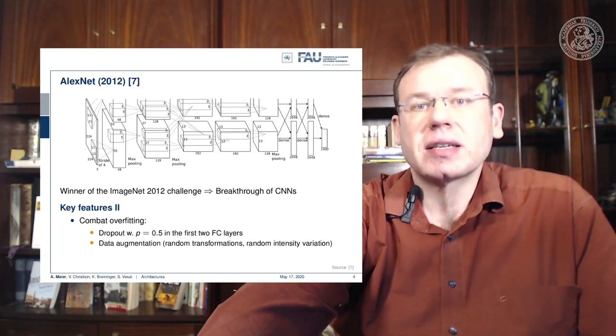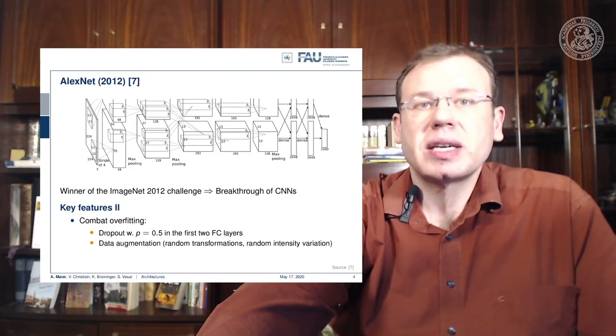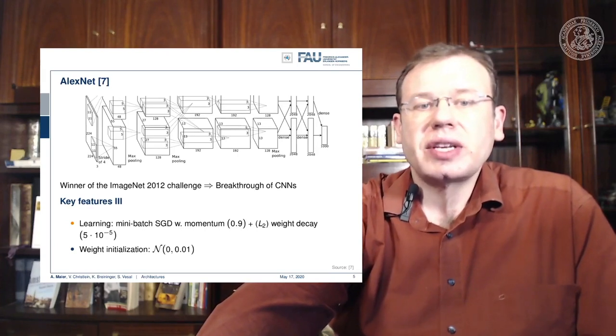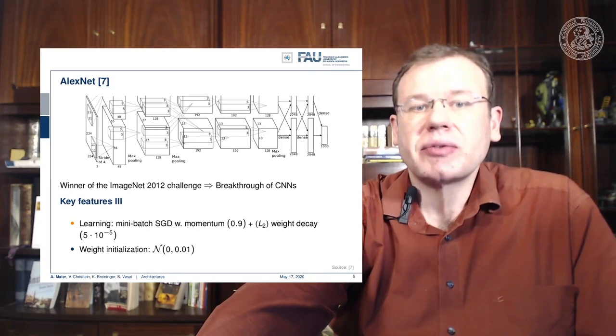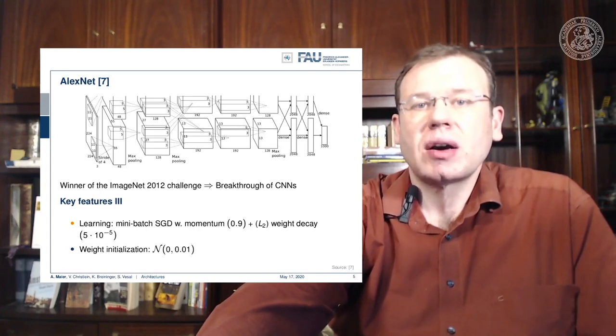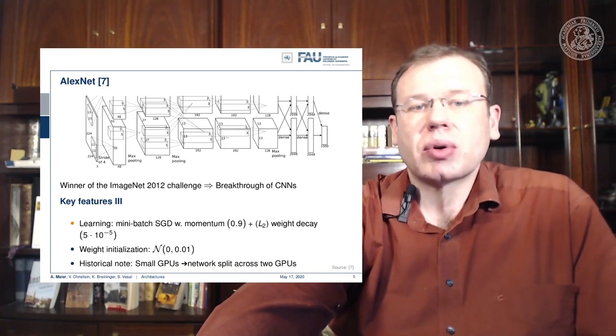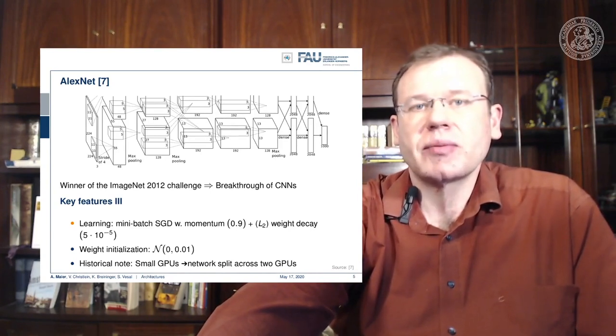To combat overfitting, this architecture already used dropout with a probability of 0.5 in the first two fully connected layers and used data augmentation with random transformations and intensity variations. Another key feature was employing mini-batch stochastic gradient descent with momentum 0.9 and L2 weight decay with a parameter setting of 5×10⁻⁵. It was using a rather simple weight initialization, just using a normal distribution with small standard deviation, which we have seen much better approaches for already.